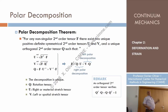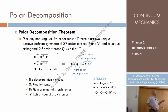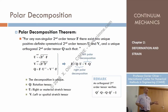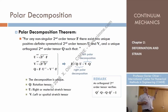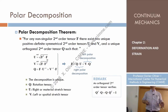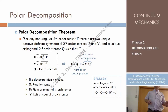Now you should know what F transpose times F means, and how do you take the square root of a tensor. Well, there is a mathematical procedure: we change the coordinates until this tensor is diagonalized, then we take the square root of the diagonal entries, and then we undo the change of coordinates. So there is a mathematical expression to compute the square root.